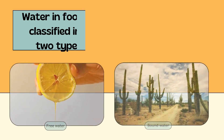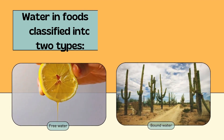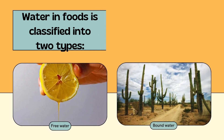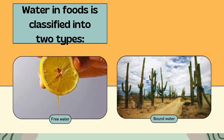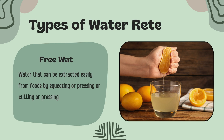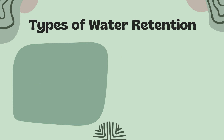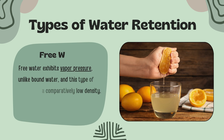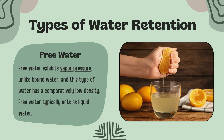Water in foods is classified into two types: first is free water and second is bound water. Free water is water that can be extracted easily from foods by squeezing, pressing, or cutting. Free water exhibits vapor pressure, and unlike bound water, this type of water has a comparatively low density. Free water typically acts as liquid water.